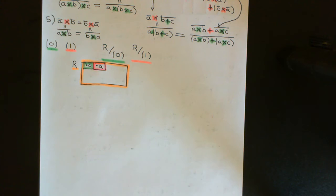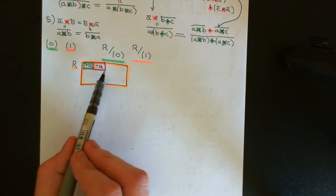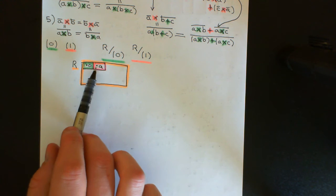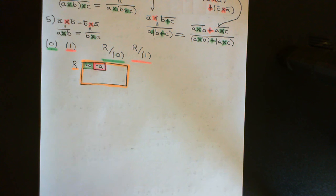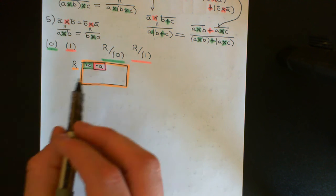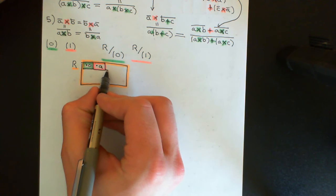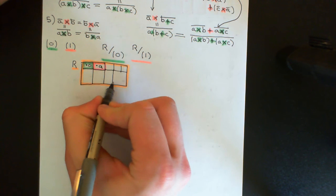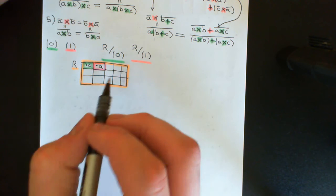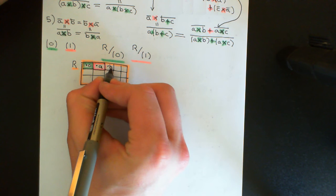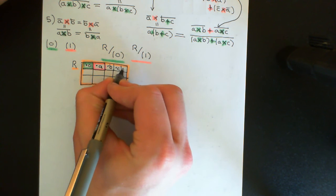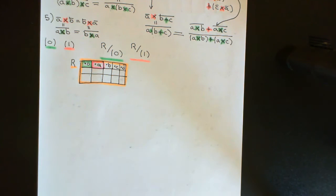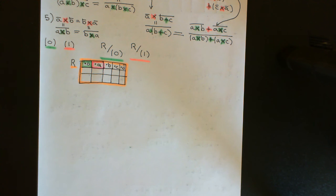That was arbitrary — a was no element in particular; all I assumed was that it wasn't the additive identity. So in fact, every single element in the ring is going to be in a coset on its own. We're going to partition up the ring into cosets that are really small — they just contain a single element. So let's say this is the coset containing b, this is the coset containing c, this is the coset containing d. The cosets partitioning the ring are just going to be cosets containing single elements.